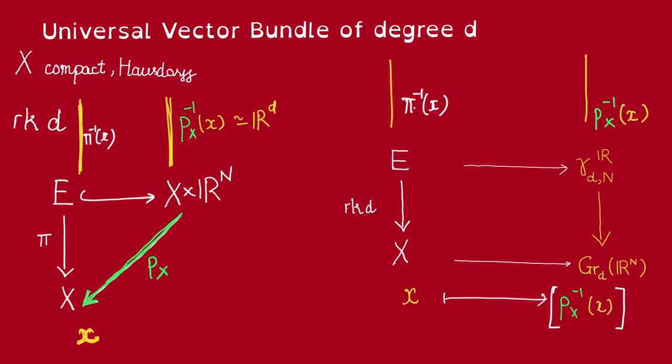Now the pullback of the fiber over this, right under this map, is really just pi inverse of x. So we immediately see that E, this vector bundle, is a pullback of this canonical bundle.